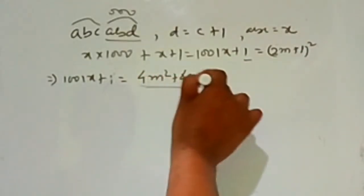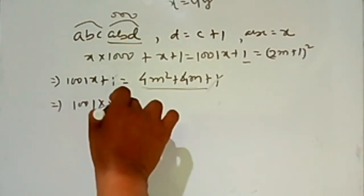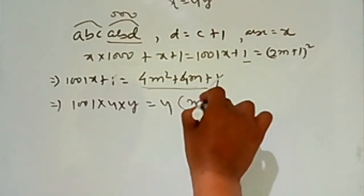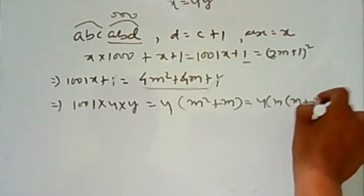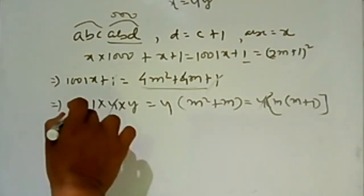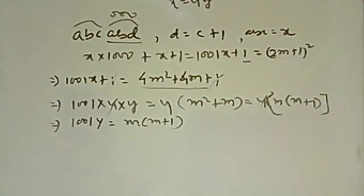Now, let's consider the case where this number is divisible by 4. Let x = 4y. Then 1001×4y = 4m² + 4m = 4×m×(m+1). The 4s cancel out, giving 1001y = m×(m+1) — a product of two consecutive numbers.